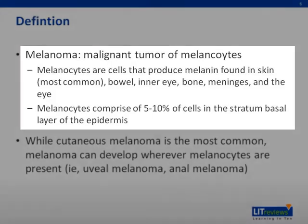Melanoma is a malignant tumor of the melanocytes. Melanocytes are cells that produce melanin, found most commonly in the skin, but they're also found in the bowel, inner ear, bone, meninges, and the eye. Melanocytes are of neural crest origin.